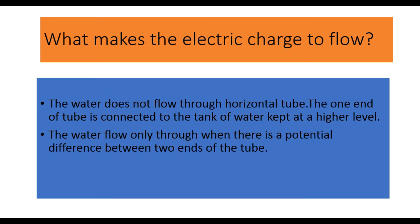To understand this question, let us consider the example of flow of water from a water tank. We have seen water pipes in houses and buildings. One end of the water pipe is connected to a tank of water kept at a higher level. Water flows only when there is a potential difference between the two ends of the tube — that is, one end has some value and the other end has a different potential value. So potential difference is responsible for the flow of water. The potential means ability to do some work — that is, the object has the ability to do some work, and here the work is the flow of water.